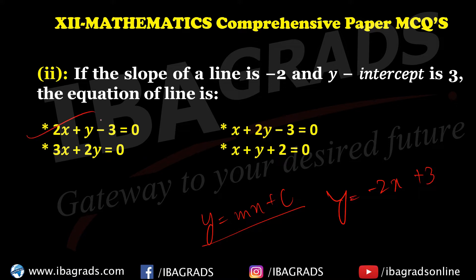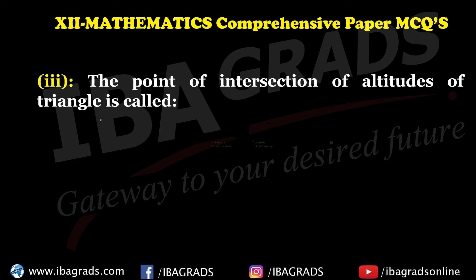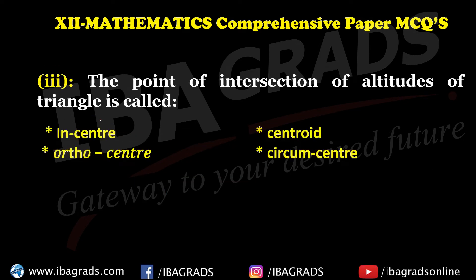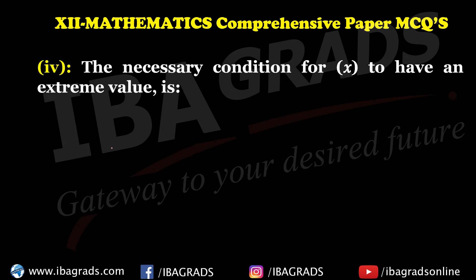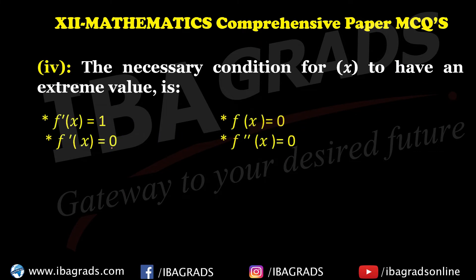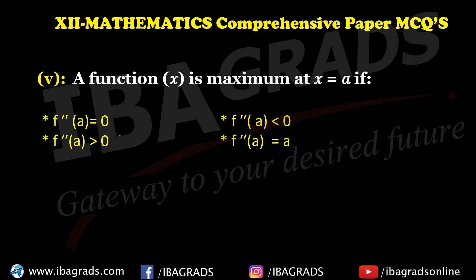The required answer is 2x + y – 3. The point of intersection of the altitudes of a triangle is the ortho-center. The necessary condition for x to have an extreme value: f(x) has a maximum at x = a when the double derivative at a is negative.